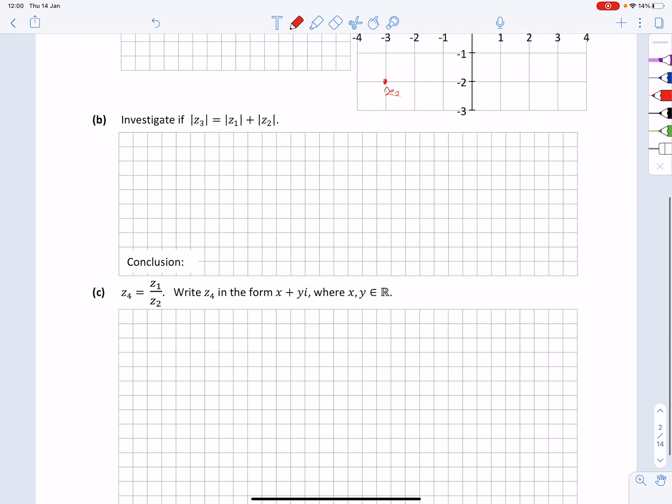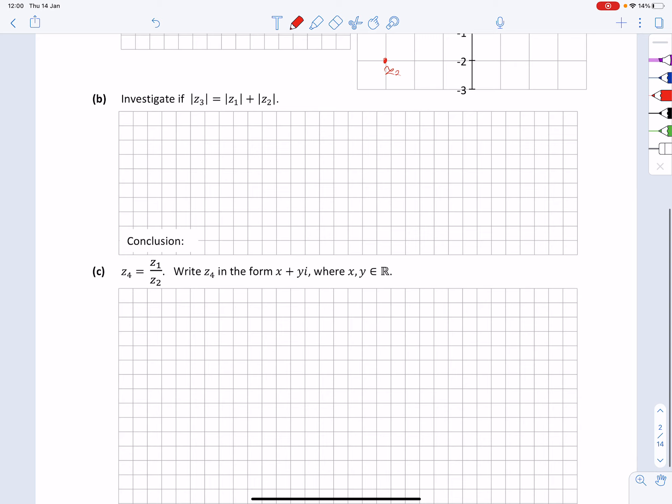So next thing we need to investigate if modulus Z3 is the same as modulus Z1 plus Z2. For partial credit, I'm going to write down that modulus. If I have number a plus bi, modulus of that number Z is square root of a squared plus b squared.